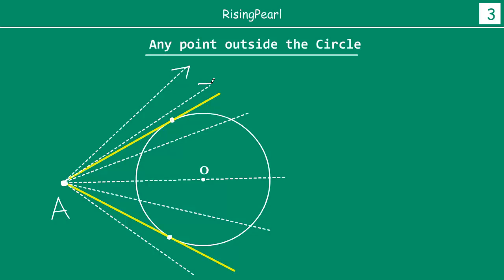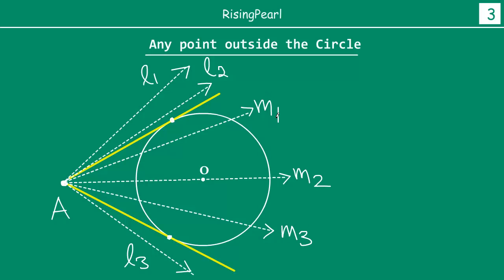For these other lines, let's call them L1, L2, and L3 — these are the non-intersecting lines. How about these lines — let's call these lines M1, M2, and M3. These lines M1, M2, M3 are secants of the circle; they intersect the circle at two points. For M1, these are the two points. For M2, these are the two points. For M3, these are the two points. But these bright yellow lines are the only two lines where the straight line touches the circle at only one point.